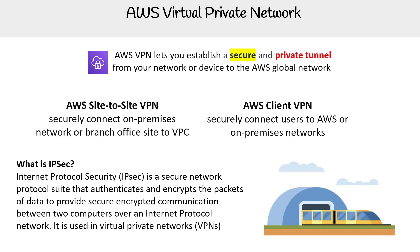If you're using Direct Connect, which is a private connection, it's not necessarily secure. So you need that additional layer to get that security. With that said, let's get into these two services: Site-to-Site VPN and AWS Client VPN.